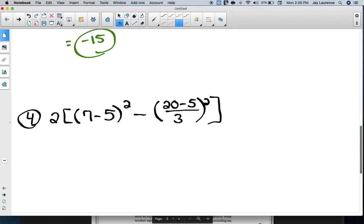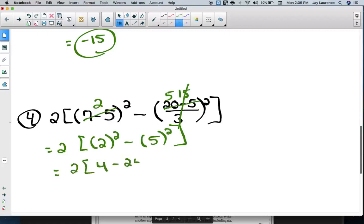I am getting ready to do problem four right now. So seven minus five is two. So there is a two in there. This is going to be 20 minus five, which is 15. And 15 divided by 3 is five. So I really have two times the quantity of two squared minus the quantity of five squared. So now I'm going to have 2 times the quantity of 4 minus 25. Okay. And that would be 2 times negative 21. Right? That should equal negative 42. And there you go.